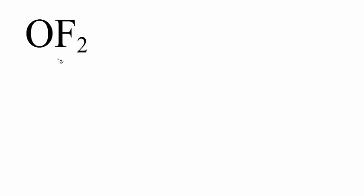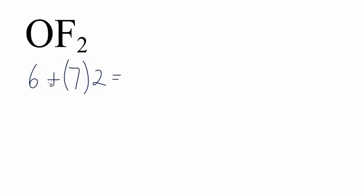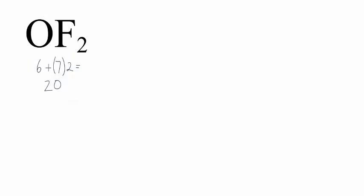We'll start with the Lewis structure for OF2. First, we find the valence electrons. Oxygen is in group 16, sometimes called 6A. It has six valence electrons, plus fluorine, which has seven, but we have two fluorines, so we'll multiply that by two. That gives us six plus 14, a total of 20 valence electrons. Next, we'll put the least electronegative atom in the center of the Lewis structure — that's going to be our oxygen — and then on either side, let's put the fluorine atoms.